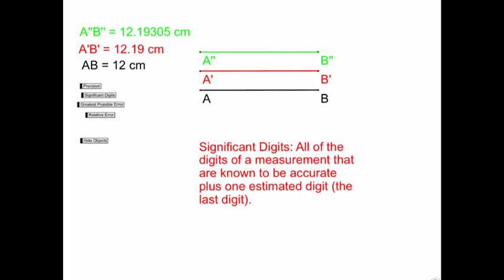The last digit of any number is going to be an estimated digit. For instance, if this digit were five or above, then this digit for line AB would be 13 instead of 12.